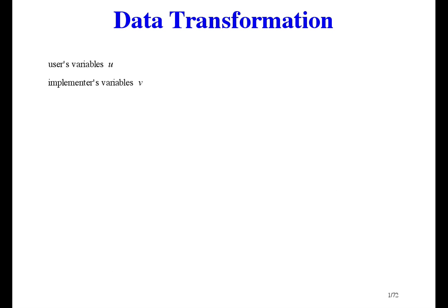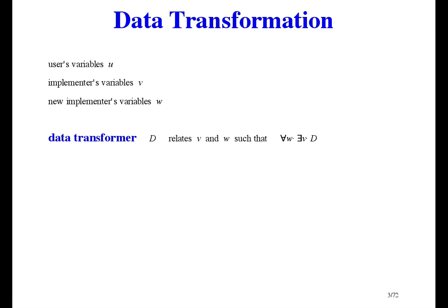Let the user's variables be u and the implementer's variables be v. u might stand for several variables, not just one, and v might be several variables. We want to replace the implementer's variables by new implementer's variables, which we'll call w. The way we do it is to write a data transformer that relates the old and new variables, and we use the transformer to transform all the specifications and programs that talk about the old variables into specifications and programs that talk about the new variables.